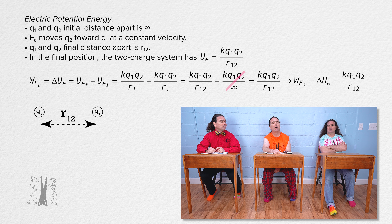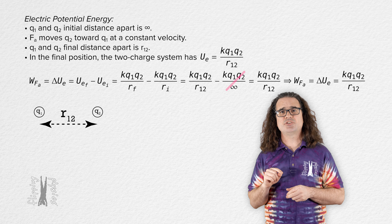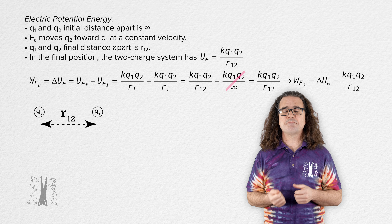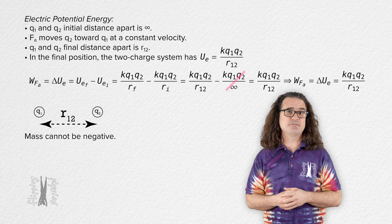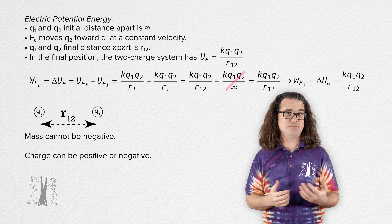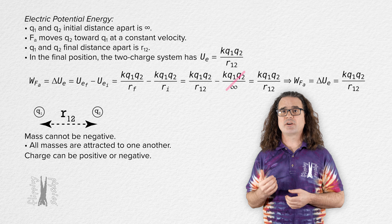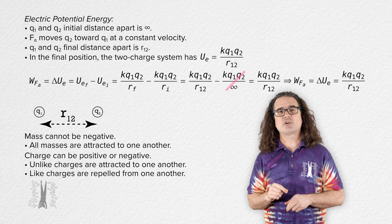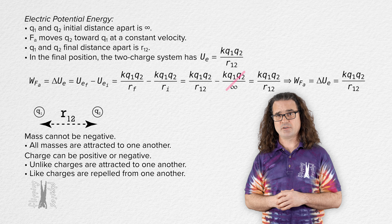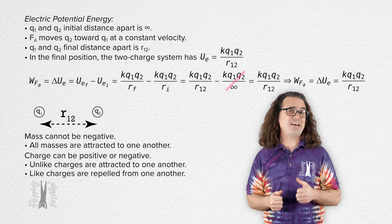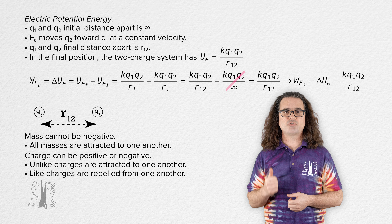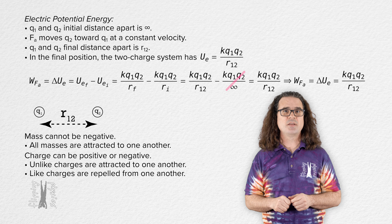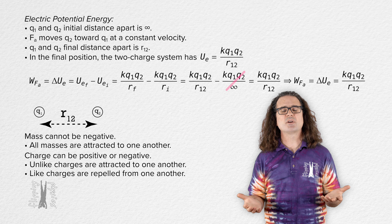While there are a lot of similarities between how gravitational and electric forces and energies function, a major difference is that mass cannot be negative while charge can be positive or negative. All masses are attracted to one another, but unlike charges are attracted to one another and like charges are repelled from one another. For example, two masses always have positive mass and are always attracted to one another, while two positive charges repel each other and two negative charges repel each other.